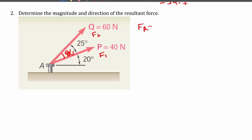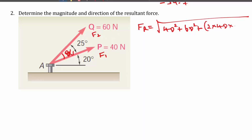FR = √(F1² + F2² + 2·F1·F2·cos α) = √(40² + 60² + 2×40×60×cos 25°). Solving this, we get the resultant value FR ≈ 97.7 N. This is the magnitude of the resultant force.